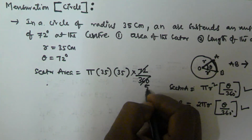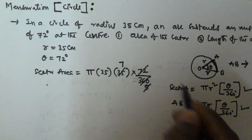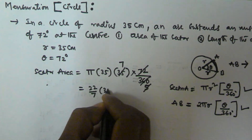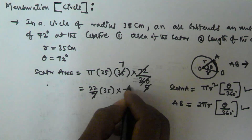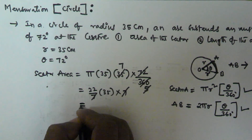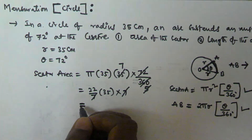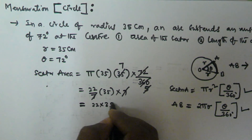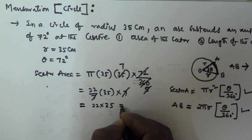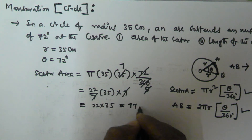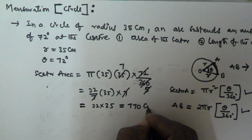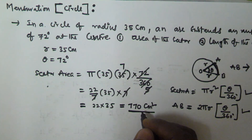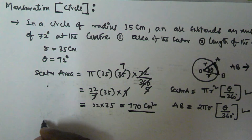Using π = 22/7, we get: 22/7 × 35 × 35 × 72/360. The 7 cancels with 35 giving 5, and 72/360 simplifies. This gives 22 × 35 = 770. So the sector area is 770 centimeters squared.